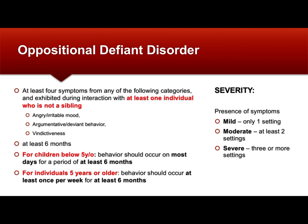A disorder in the family of disruptive impulse control and conduct disorders is Oppositional Defiant Disorder. If you imagine what this person is like, this is a person who likes to talk back and tries to annoy people, especially those in authority — such as a teacher, a police officer, or a parent. This person would most likely want to talk back and refuse to follow what you ask them to do.